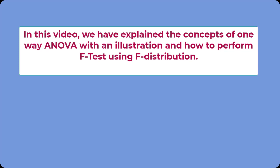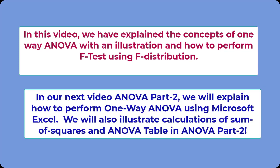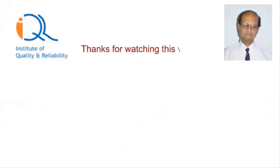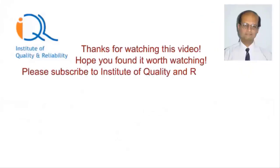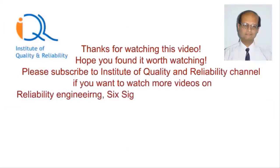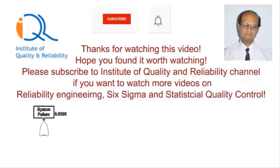In this video, we have explained the concepts of one-way ANOVA with an illustration and how to perform the F-test using F-distribution. In our next video, ANOVA Part 2, we will explain how to perform one-way ANOVA using Microsoft Excel, and also illustrate calculations of sum of squares and the ANOVA table. Thanks for watching this video. Hope you found it worth watching. Please subscribe to Institute of Quality and Reliability channel for more videos on Reliability Engineering, Six Sigma, and Statistical Quality Control.